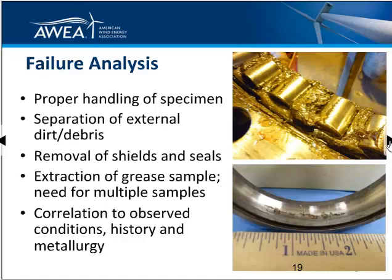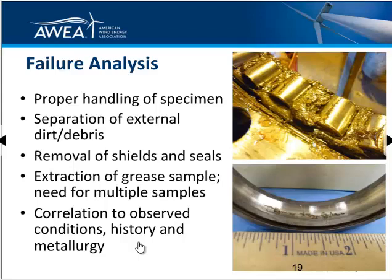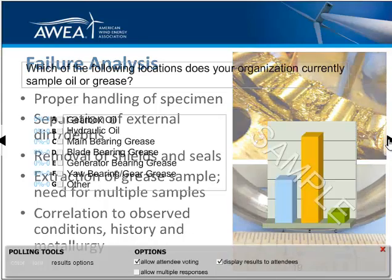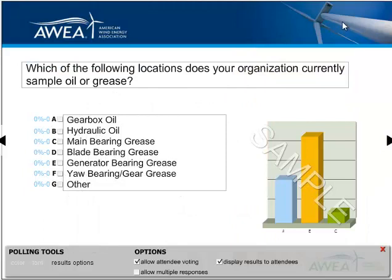The ASTM standard also talks about failure analysis. When there is a failure, there is a lot of value in extracting information about the factors that led to it. It talks about proper handling of the specimen, keeping it clean and protected, separating external dirt and debris from the grease that was in the bearing, how we remove shields and seals to access the location, the need for multiple samples to see different things going on, and correlating observed conditions to history and metallurgy in the failure analysis.